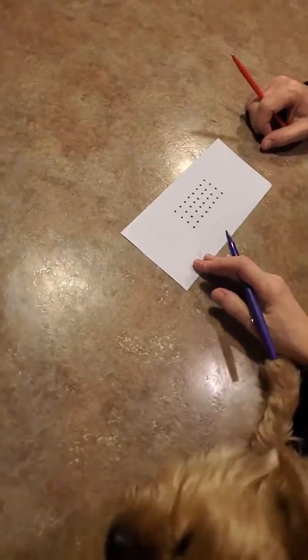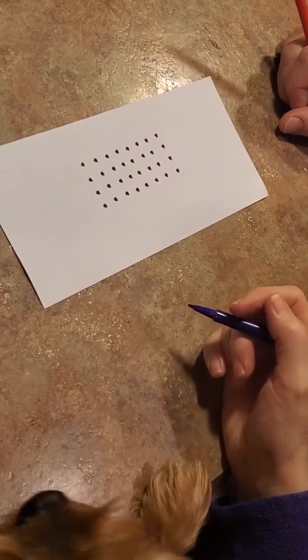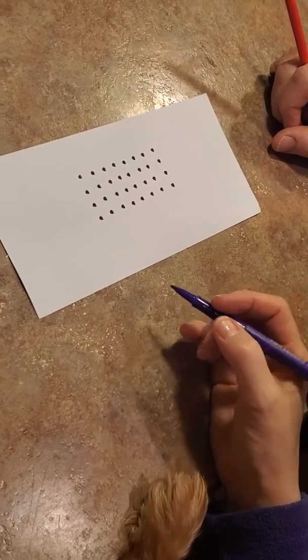To play this game, you take turns drawing a line between two boxes. When you finish a box, then you get to put your initial in it. We'll show you how to play it.